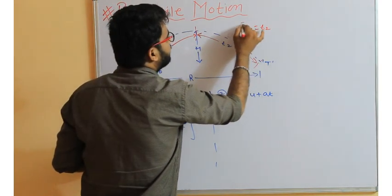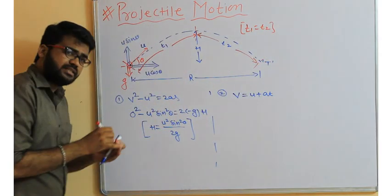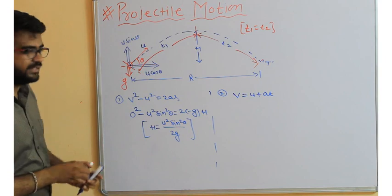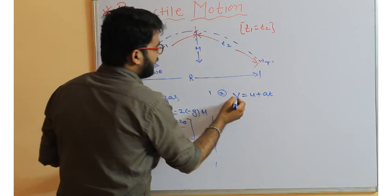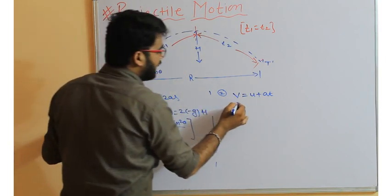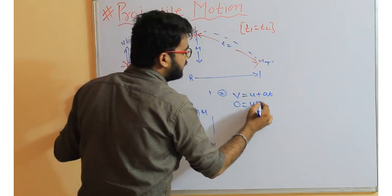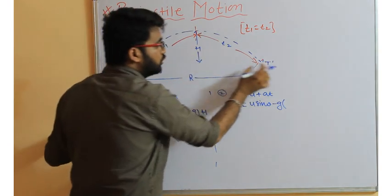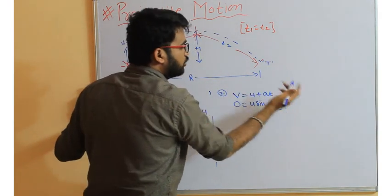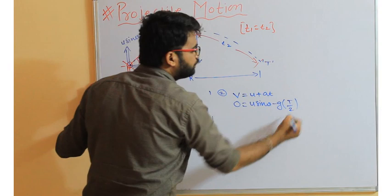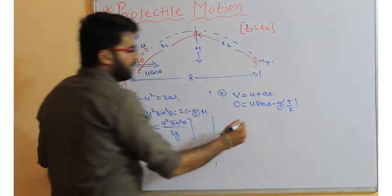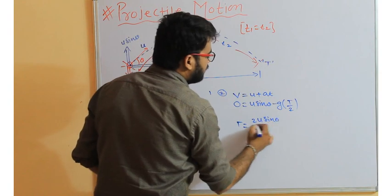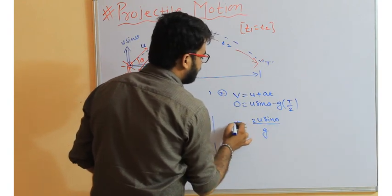So the final vertical velocity is zero = u sinθ - g·t₁. Since t₁ = t₂, the total time of flight T = 2t₁, giving us T = 2u sinθ divided by g. So that is the time of flight formula.